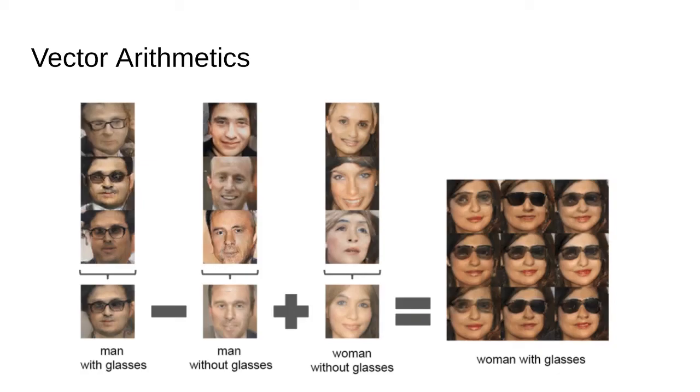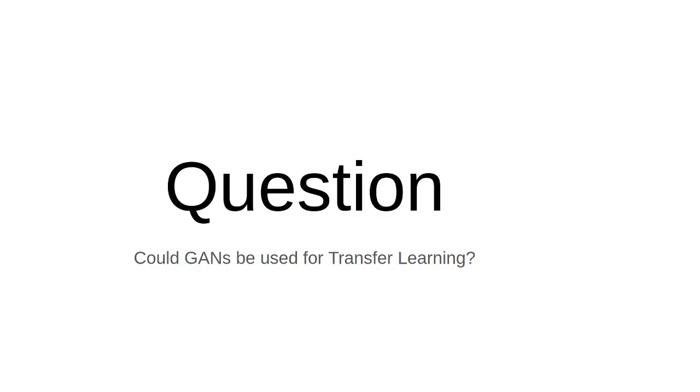It was also found that the vector representation can be used to change the pose or the emotion on the resulting image. For example, they subtract smiling faces from angry faces and then add the difference to an angry face to make it smile.